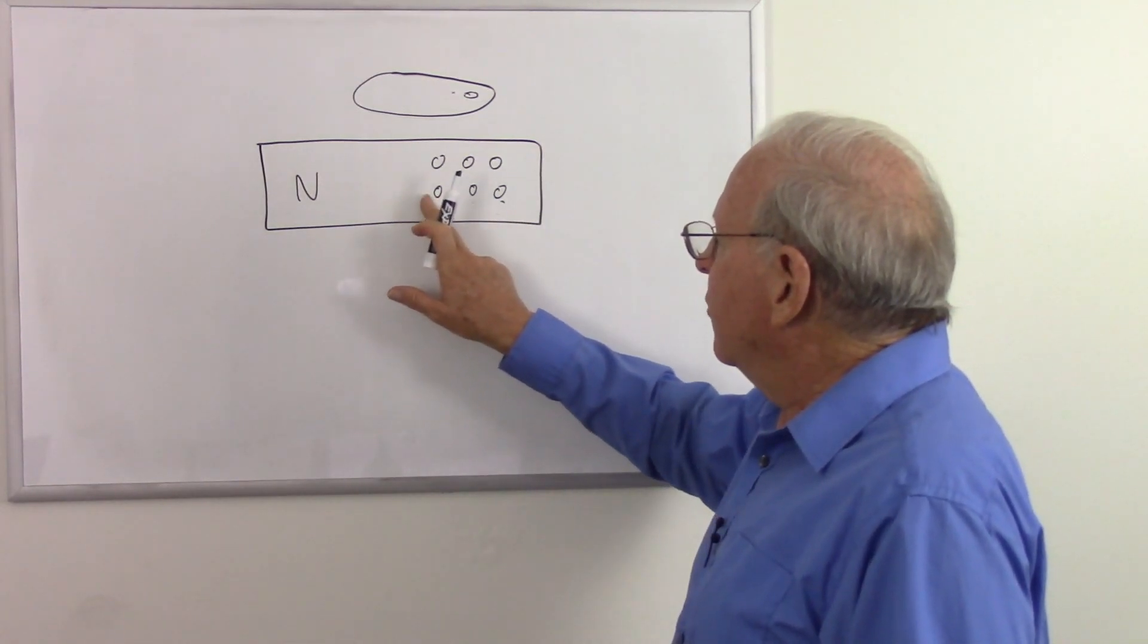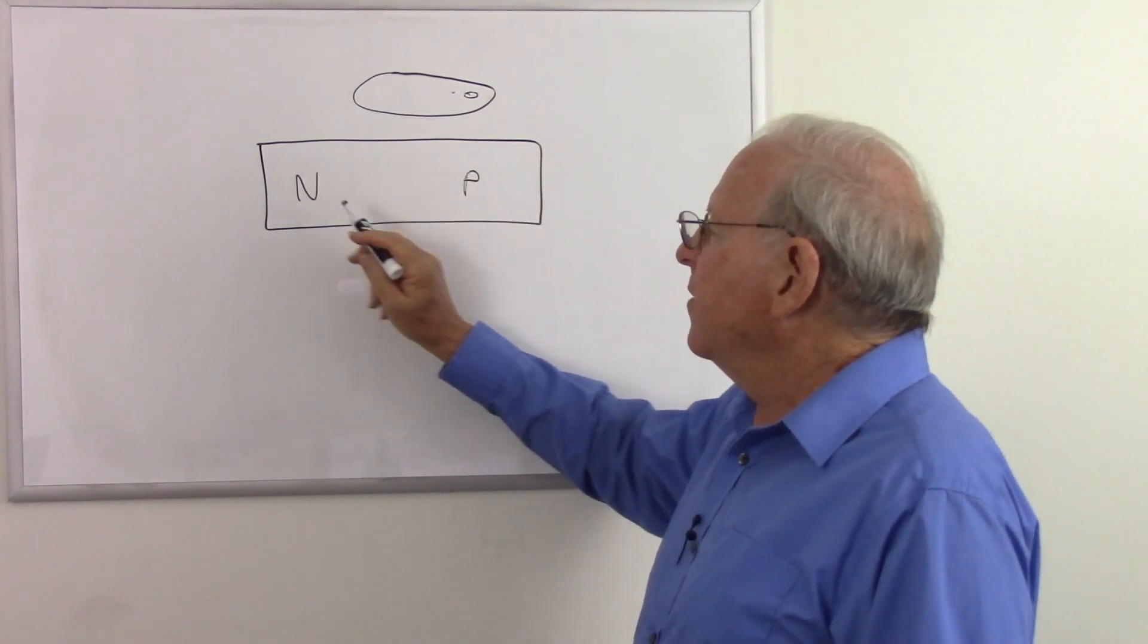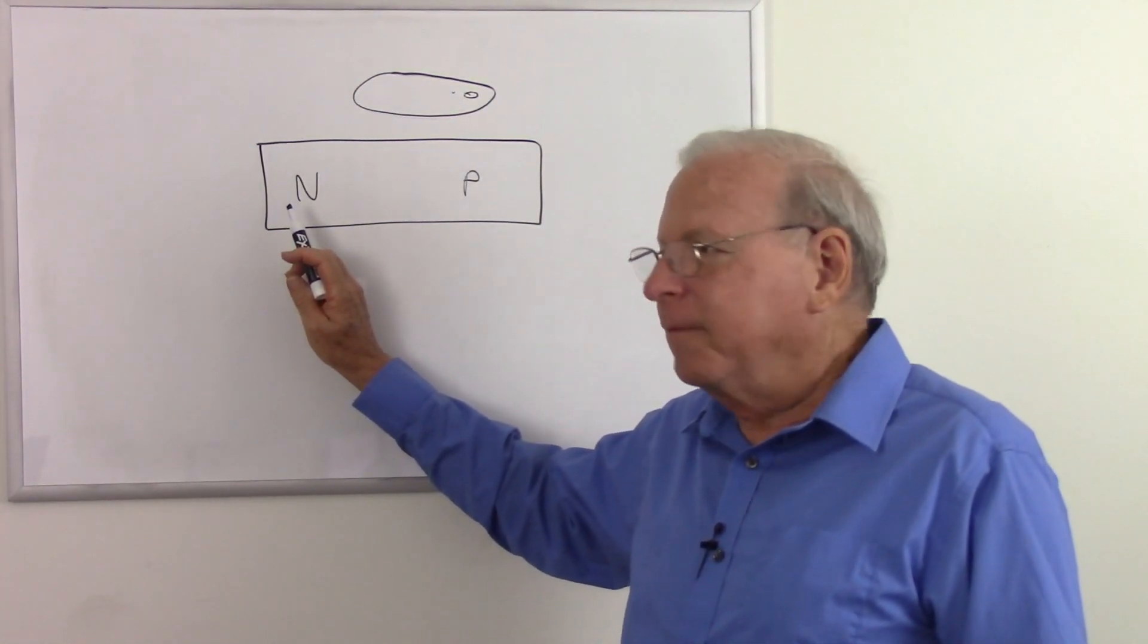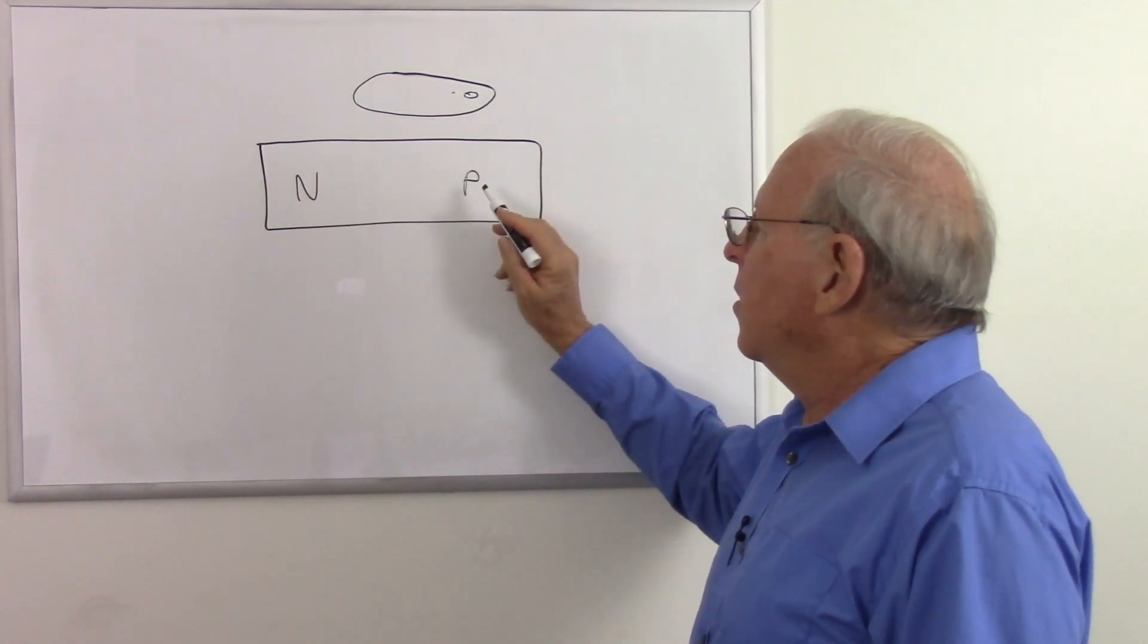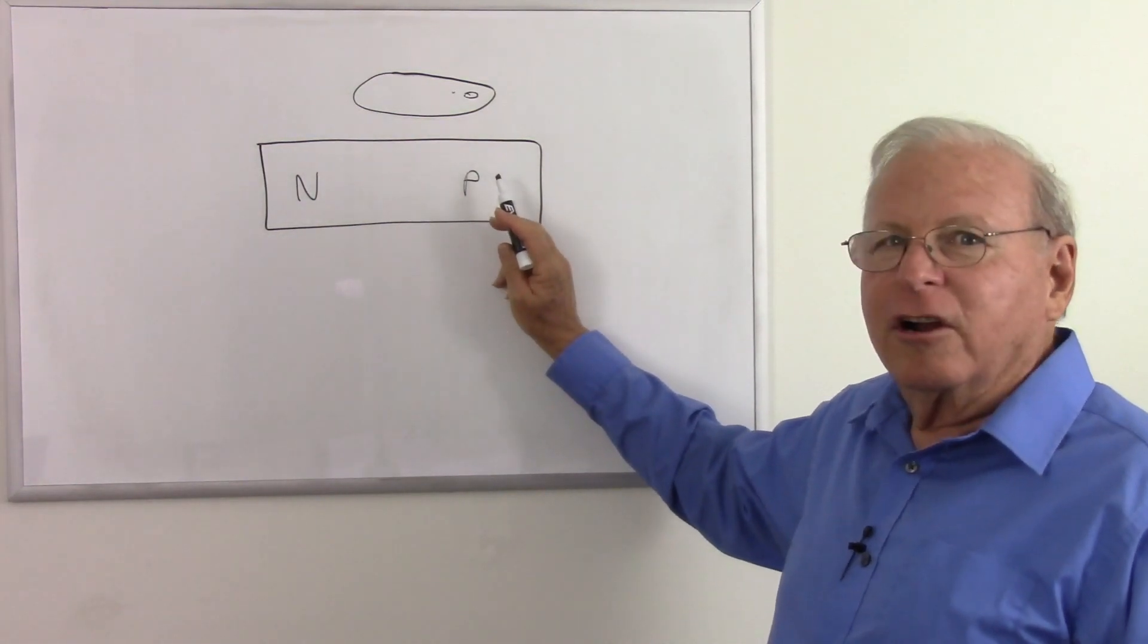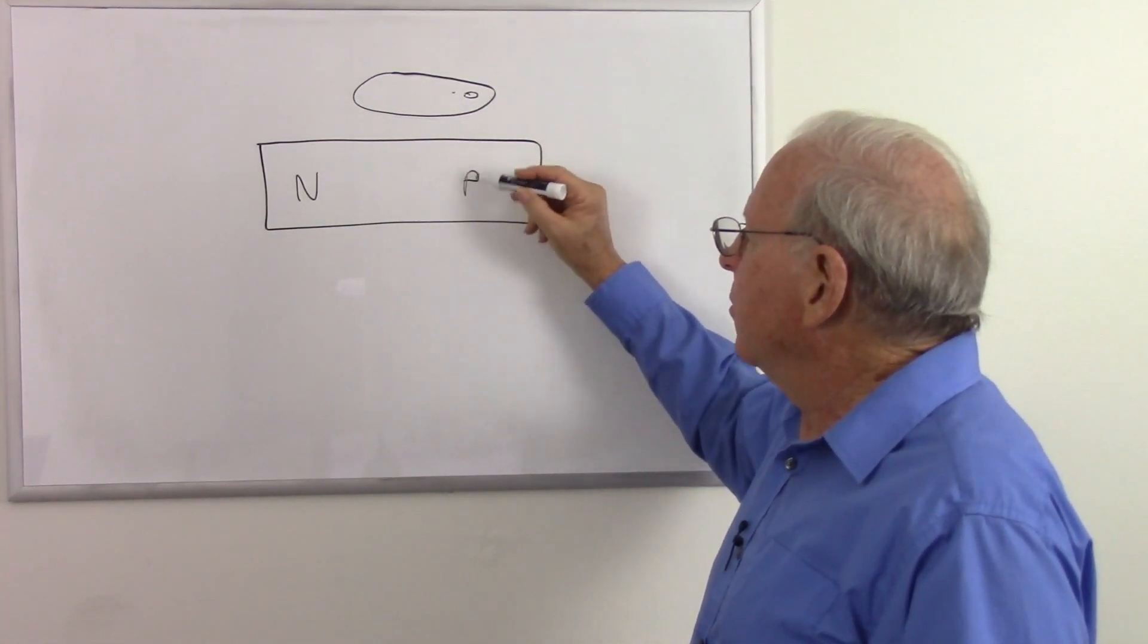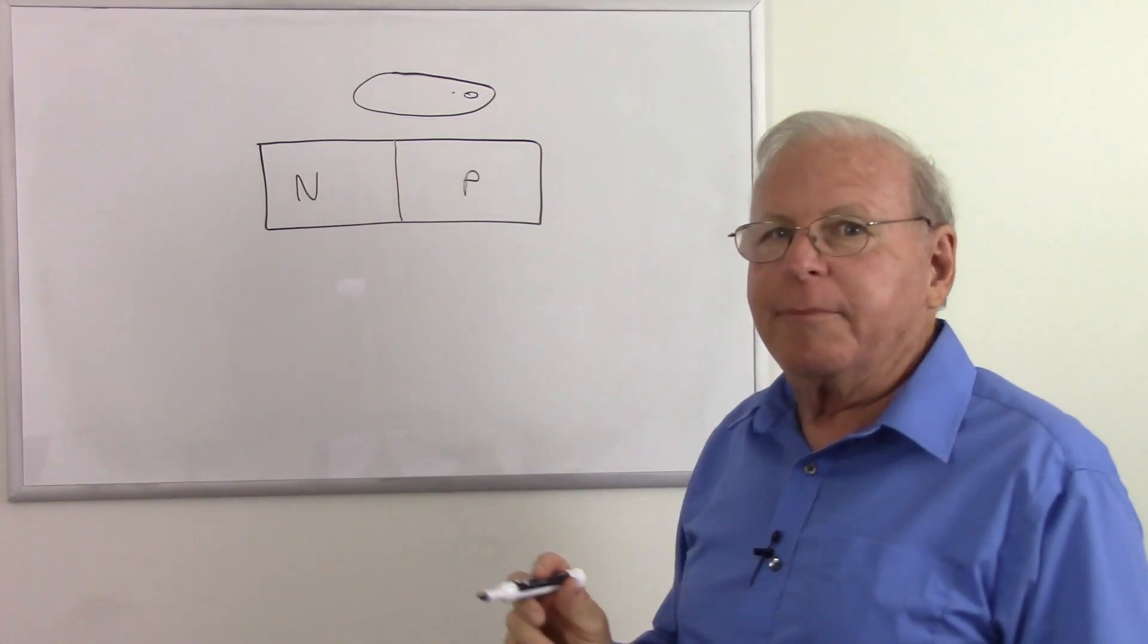In this side, since we have a deficiency of electrons, we call that the p-side. So we have extra electrons here. Electrons are negatively charged, but it's really neutral because for every extra electron there's an extra proton. So it's not really negatively charged, but it has free electrons, so we call that n-type material. Over here we have a deficiency of electrons. It's not positively charged because there's also a deficiency of protons. There's just holes in the structure that are attractive to electrons and cause electrons to hang around, so we call that the p-type. And right in the middle we have the junction between the two types of material.